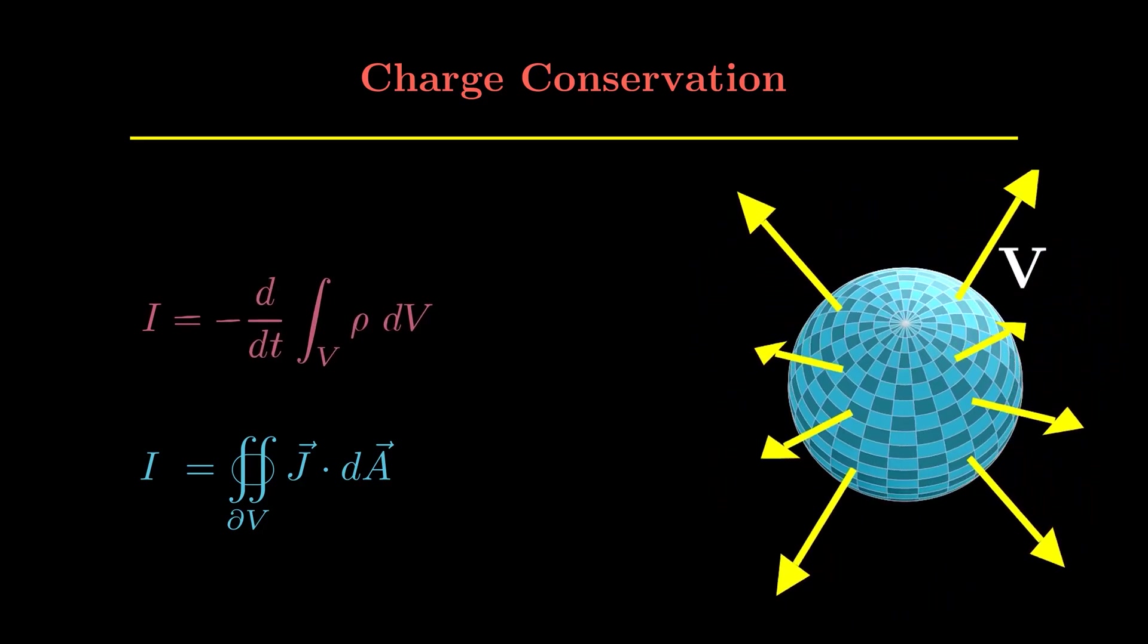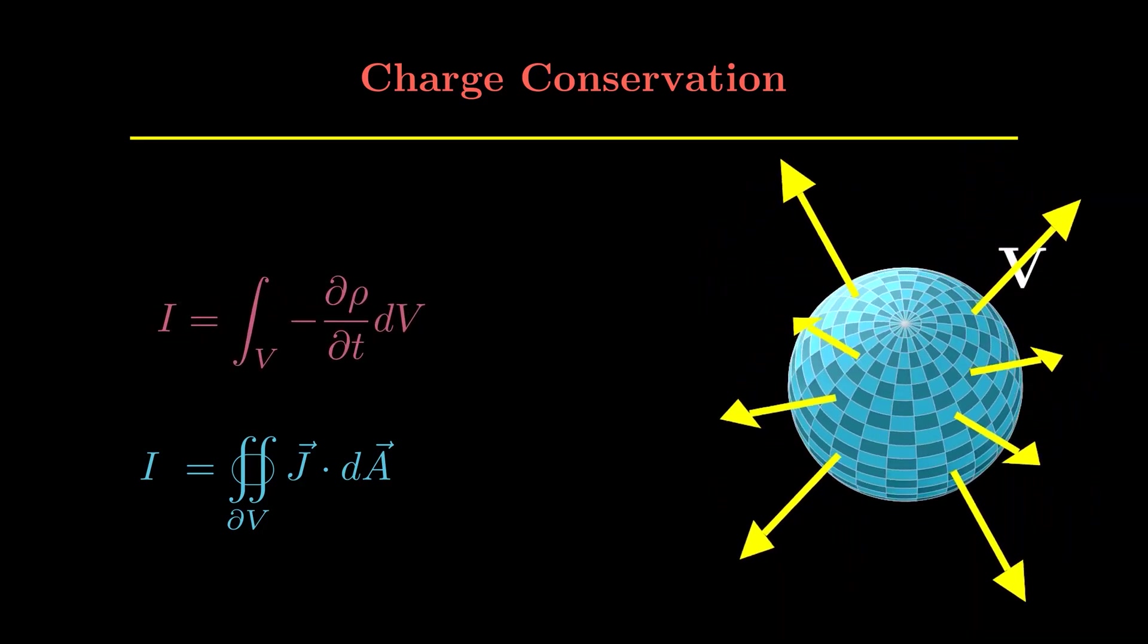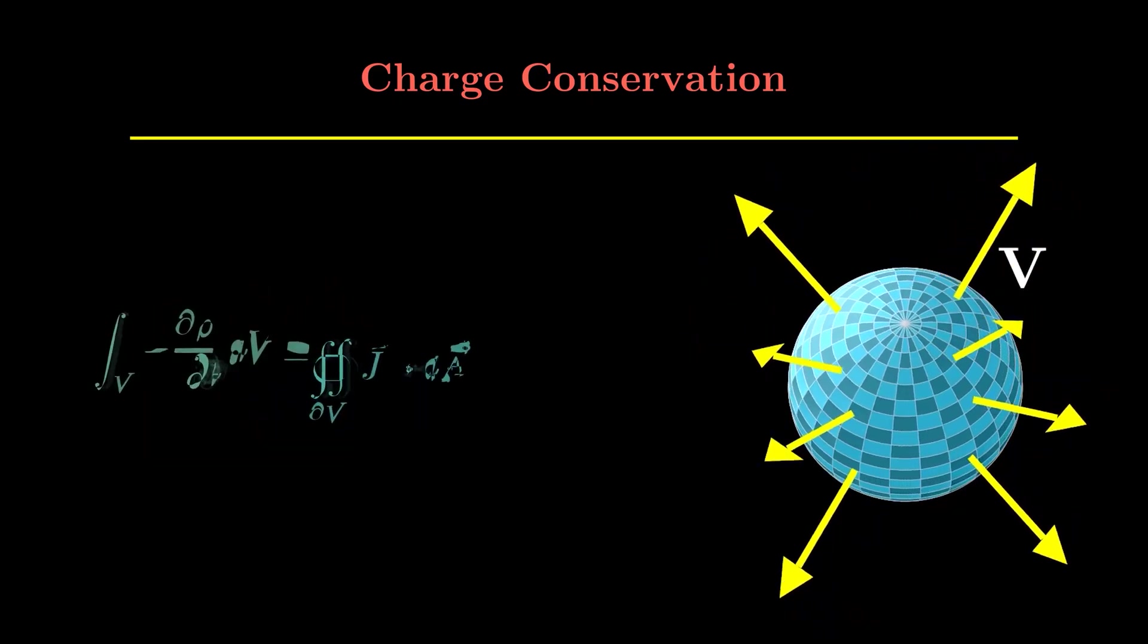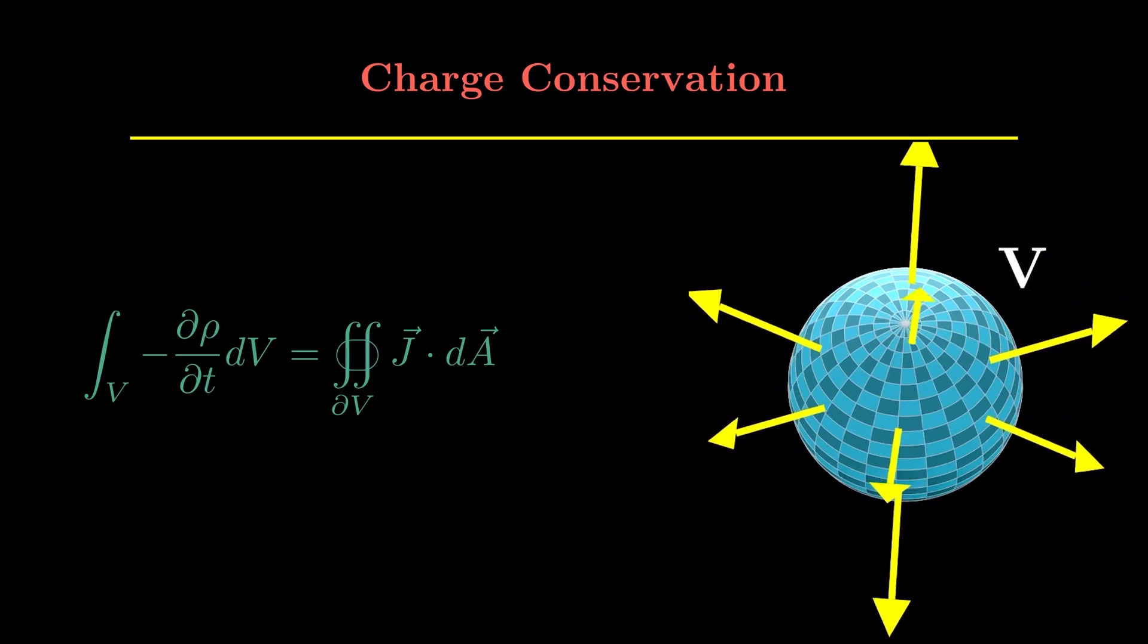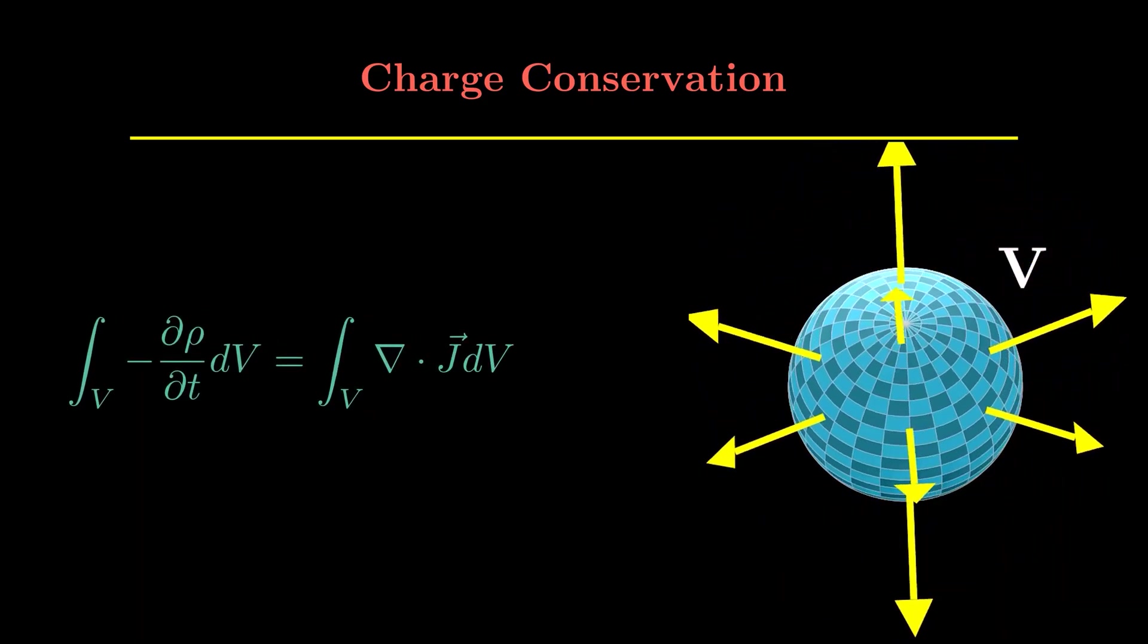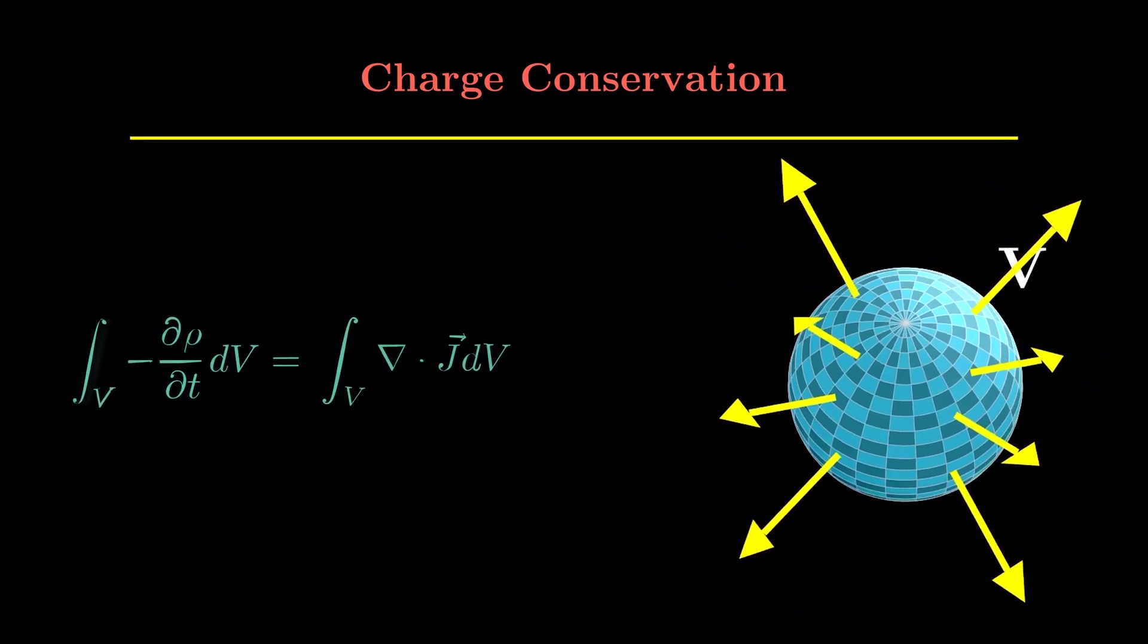Then we write the current as the negative derivative of the charge, which is represented by this integral. Then we convert the integral using Feynman integration. Then we write this equation just by equating the two terms.